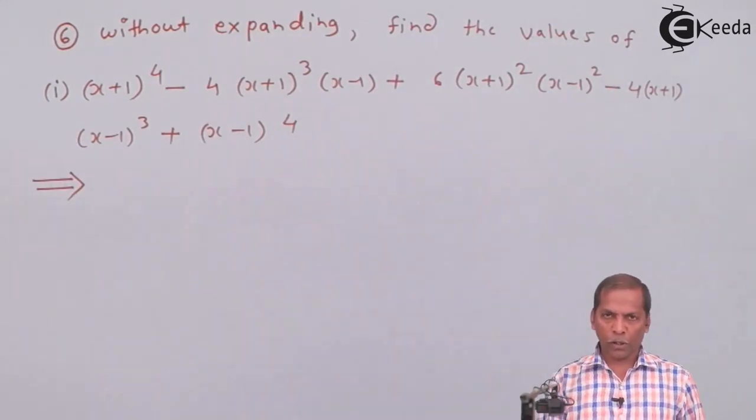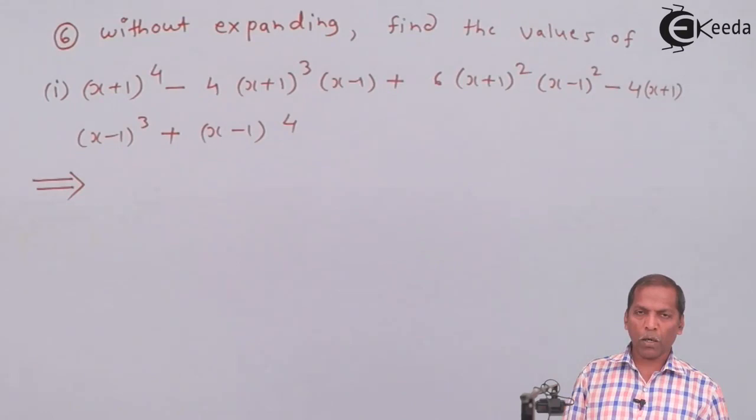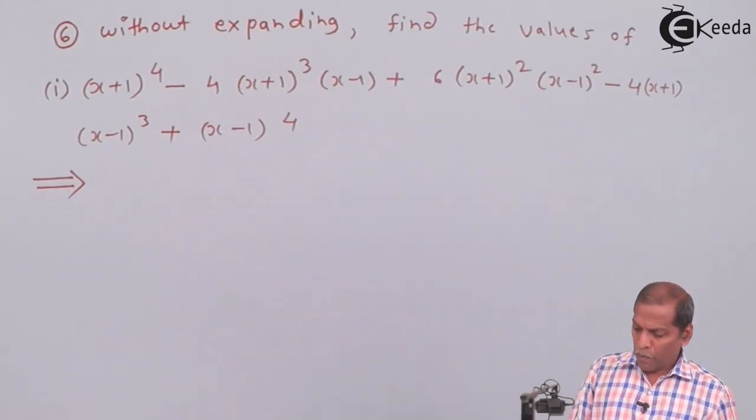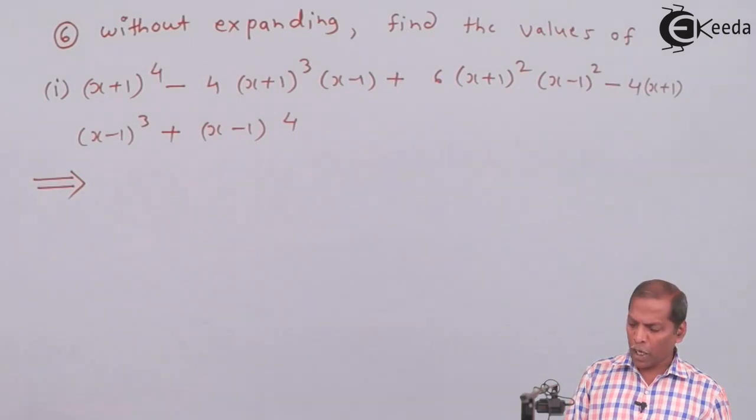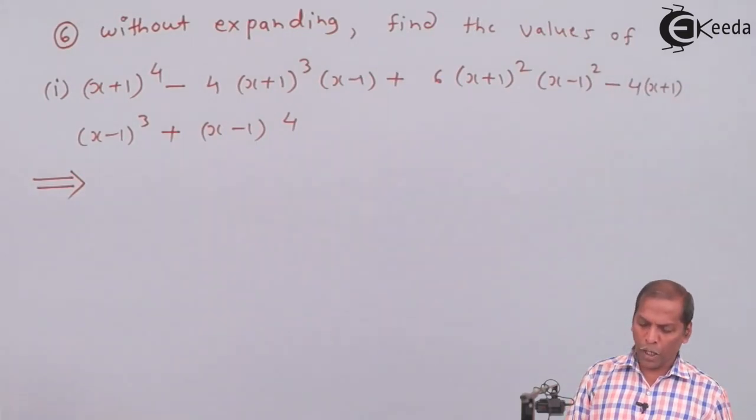Now let's see the solution. Here the solution is quite simple. First, if we observe in the question there are only two terms: one term is x+1 and the other term is x-1.